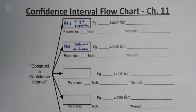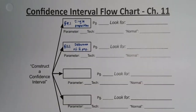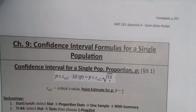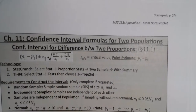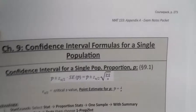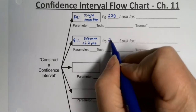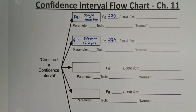The page numbers may change depending on the semester you're watching this. For fall 2021, the confidence interval for proportions from section 9.1 is on page 273, and the section 11.1 difference of two proportions is on page 274. Put whatever page it is for your particular semester.